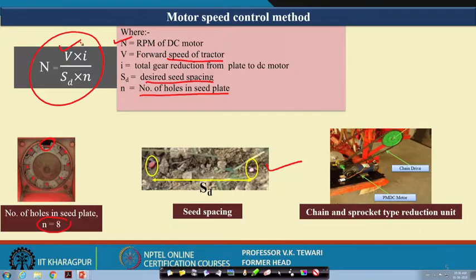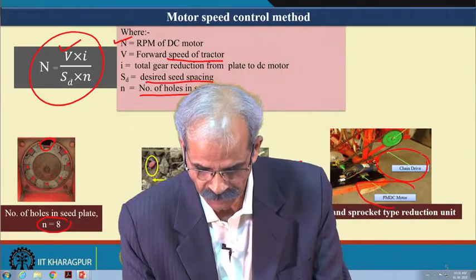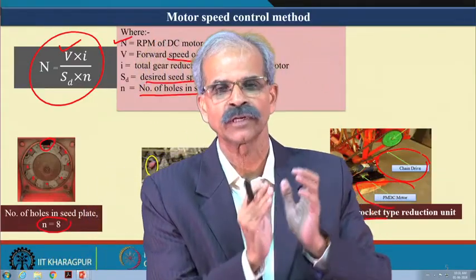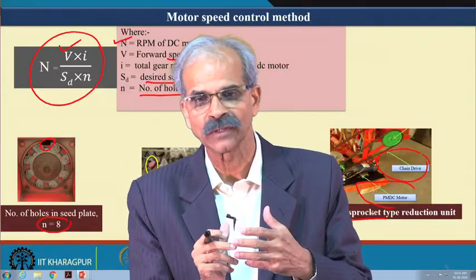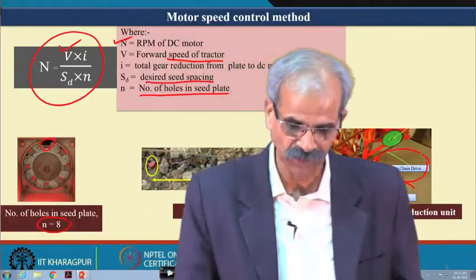Once the RPM is designed, a PMDC motor drives the seed metering mechanism via a chain and sprocket reduction unit. This is a chain and sprocket mechanism — we talk of electronics providing input information and directing the mechanical device to do the job. This is how the motor speed control method works in the microcontroller-based equipment.